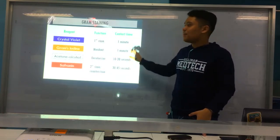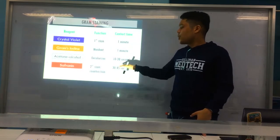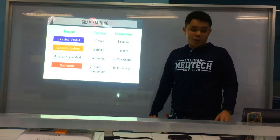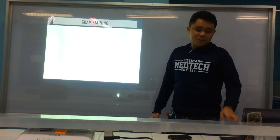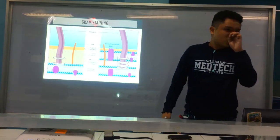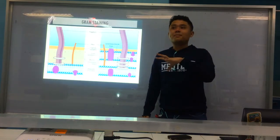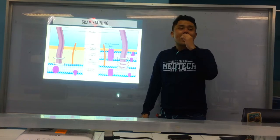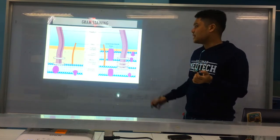But theoretically: crystal violet — one minute; Gram's iodine — one minute; decolorizer — 10 to 30 seconds; and safranine — 30 to 45 seconds. So now, this is the principle — why gram-positive is gram-positive and why gram-negative is gram-negative. For gram-positive organisms, please take note of their thick peptidoglycan or murein layer compared to gram-negative.